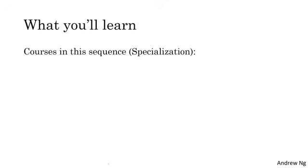So here's what you'll learn in this sequence of courses, also called a specialization on Coursera. In the first course, you learn about the foundations of neural networks. You learn about neural networks and deep learning. This video that you're watching is part of this first course, which lasts four weeks in total. And each of the five courses in this specialization will be about two to four weeks, with most of them actually shorter than four weeks.